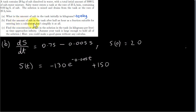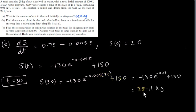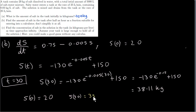In part B of this question, we want to find the amount of salt in the tank after half an hour. After half an hour, t equals 30 minutes — remember, t is in minutes. So s at time 30 is found by plugging 30 in for t. We get an answer of 38.11 kilograms. Notice that the amount of salt in the tank is actually increasing: the amount at time zero was 20 kilograms, and at t equals 30 minutes it is 38.11 kilograms.